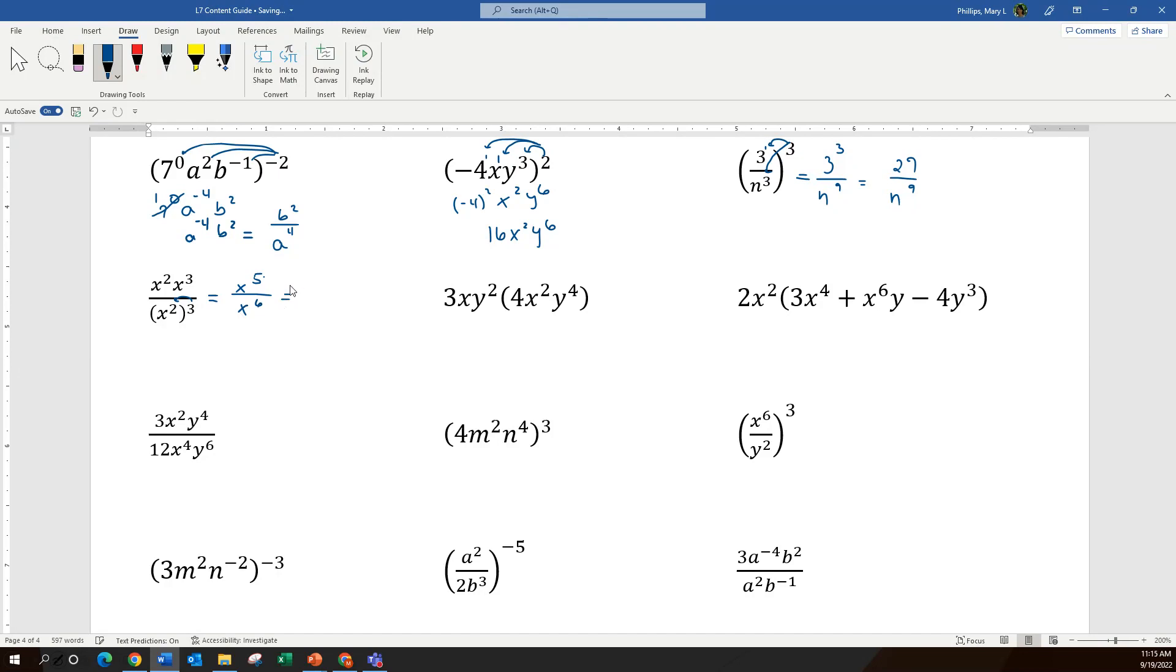And then I do the division, which says to subtract. So I get x to the negative 1. And finally, that becomes 1 over x. So four rules of exponents in one problem to get to the simplification.